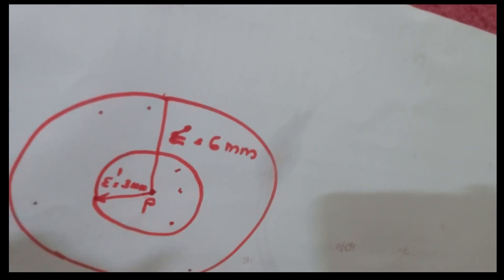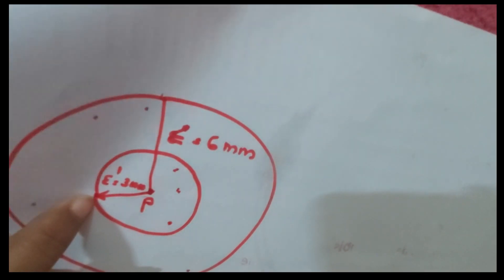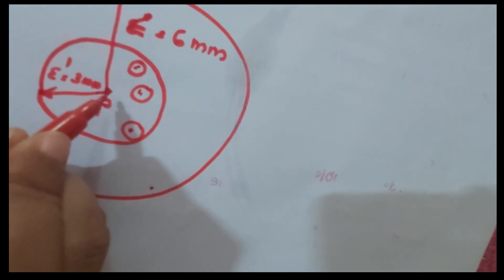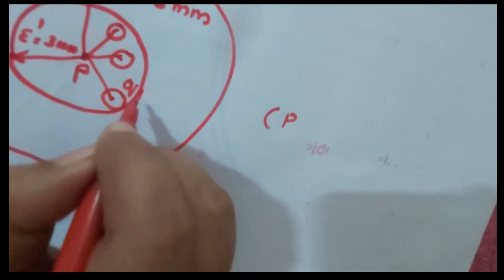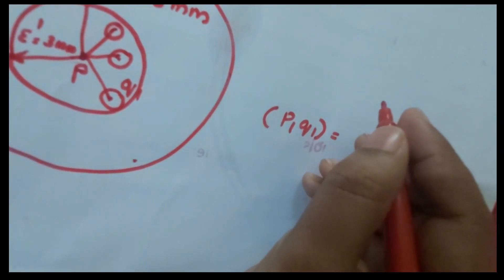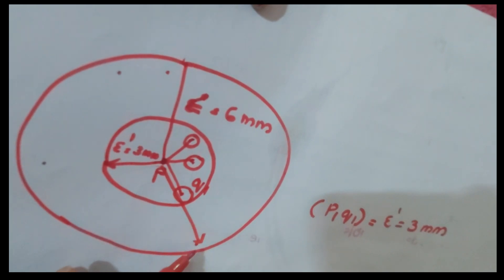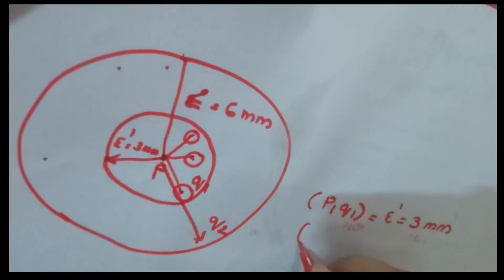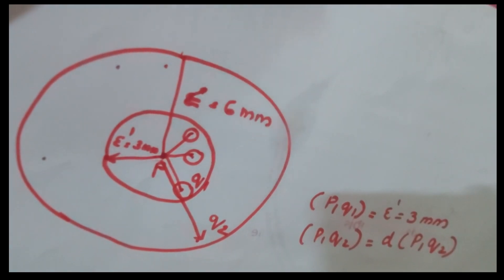To find the reachability distance, we use the greater value of the core distance of p. For a point q1 that lies within the core distance, the reachability distance of p with respect to q1 equals the core distance — 3 millimeters. For a point q2 that lies outside the core distance, the reachability distance of p with respect to q2 equals the Euclidean distance between p and q2.